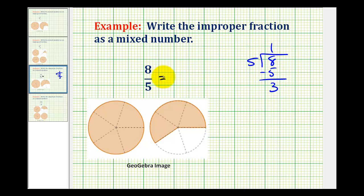This tells us that eight-fifths is equal to one whole, and then the fraction part of the mixed number, we put the remainder over the divisor. So we have one and three-fifths.